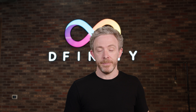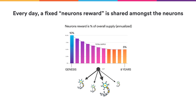Rewards are calculated differently. Every day, a fixed neurons reward is shared amongst the neurons in proportion to their relative claims. On an annualized basis, the neuron reward starts at 10% of the ICP supply, then falls over eight years to 5%.